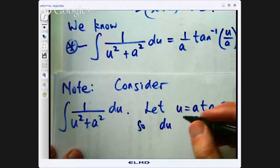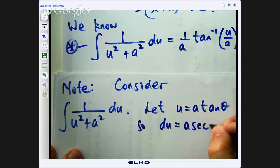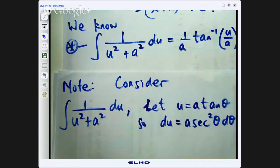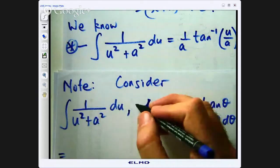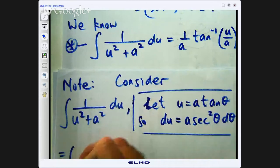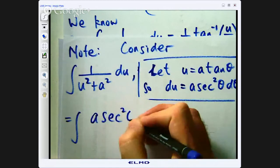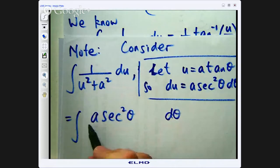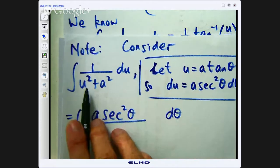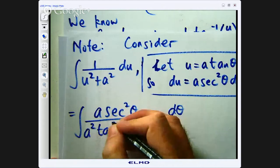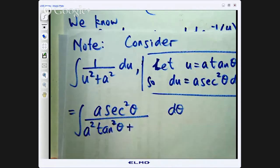So if u equals a tan θ. What is du going to be. Well a is a constant. If we differentiate tan we get sec² θ. So it is going to be a sec² θ dθ. So then this, after we make the substitution, is going to become a sec² θ dθ out here. And in the bottom we are going to have a² tan² θ plus a².